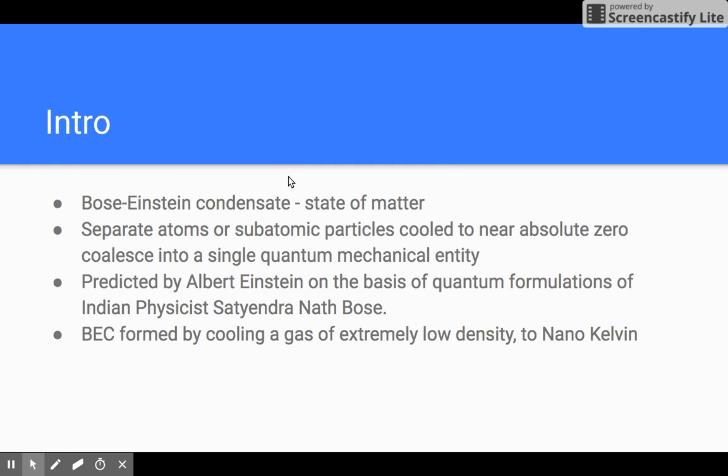In a Bose-Einstein condensate, or BEC, a large fraction of bosons occupy the lowest quantum state, at which point microscopic quantum phenomena like wave function interference become apparent. A BEC is formed by cooling a gas of extremely low density, about one hundred thousandth the density of normal air, to ultra-low temperatures of nanokelvin.